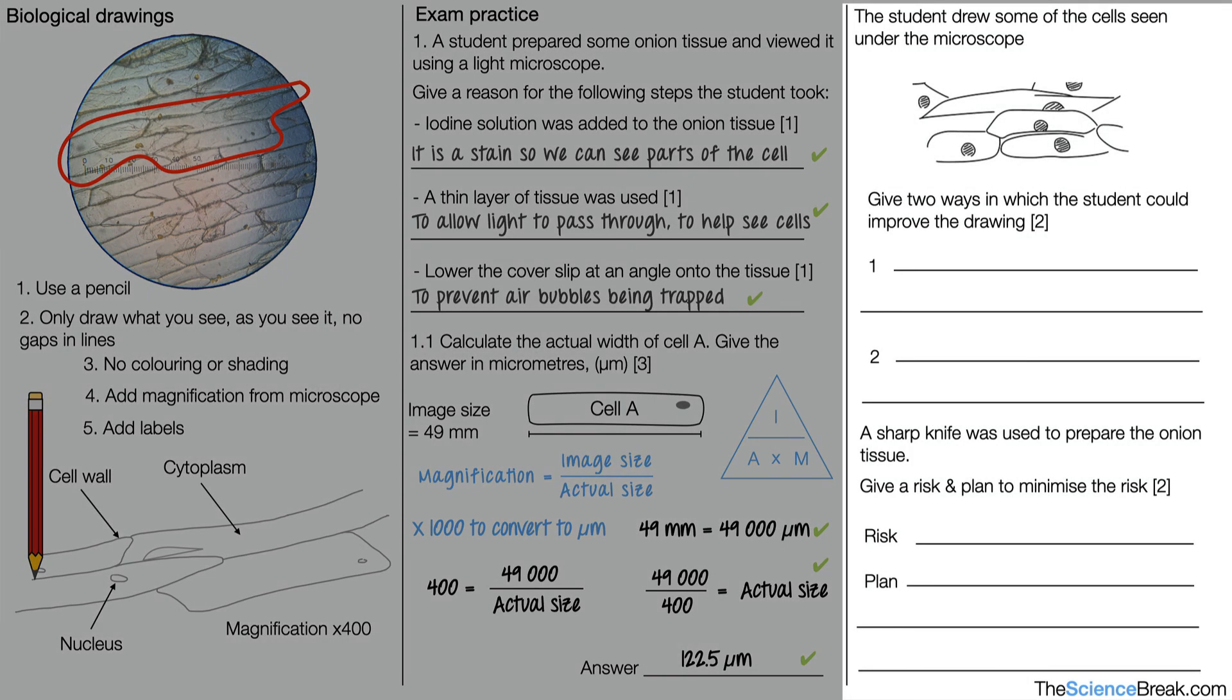Next question. The student drew some of the cells under the microscope. It says give two ways in which the student could improve the drawing. Number one, we could add the magnification. That will get you a mark. And number two, we could make sure we do not shade. You can see the nuclei of the cells have been shaded and we don't shade in biological drawings. That's the second mark.